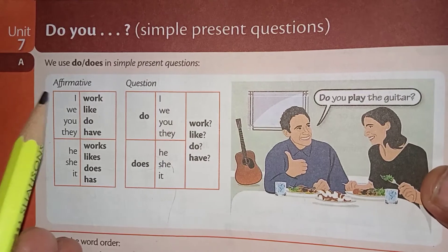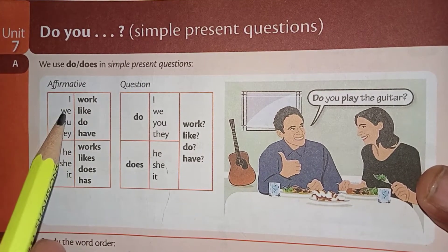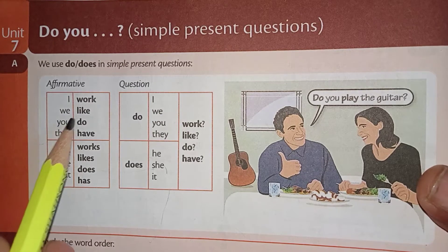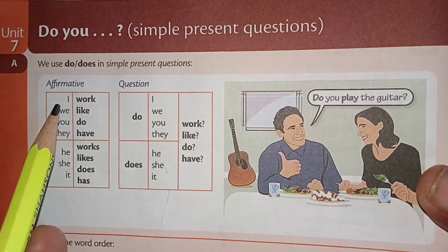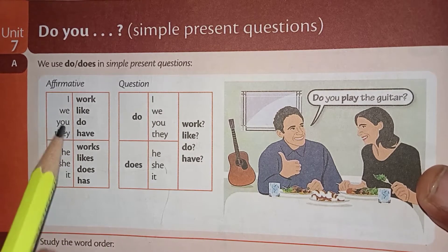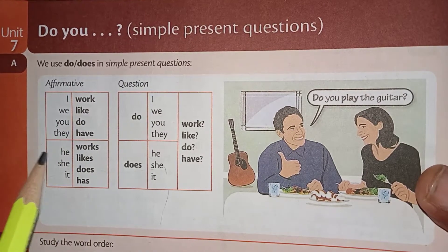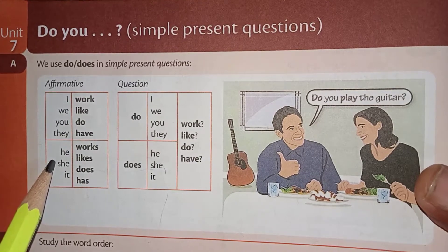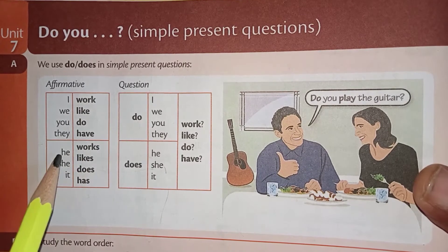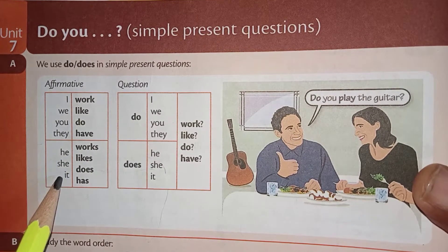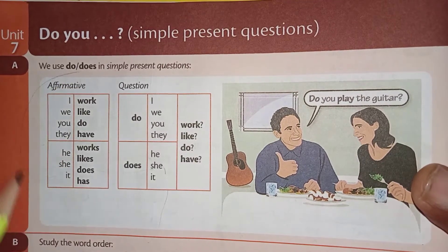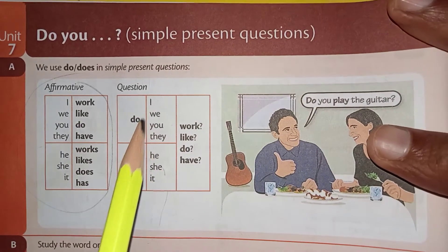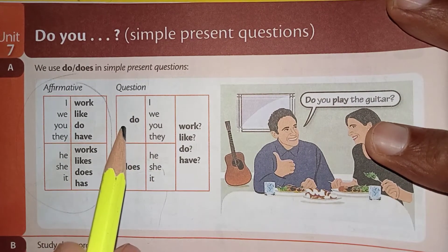Here we have affirmative common sentences: I work, we like, you do, they have, they like, they work, you have, you like, I do, we have. With singular subject pronouns — he works, he likes, he does, he has, she works, she has, it works, it has — we use an 's' with the verbs because these are singular. This is the pattern for writing affirmative sentences.